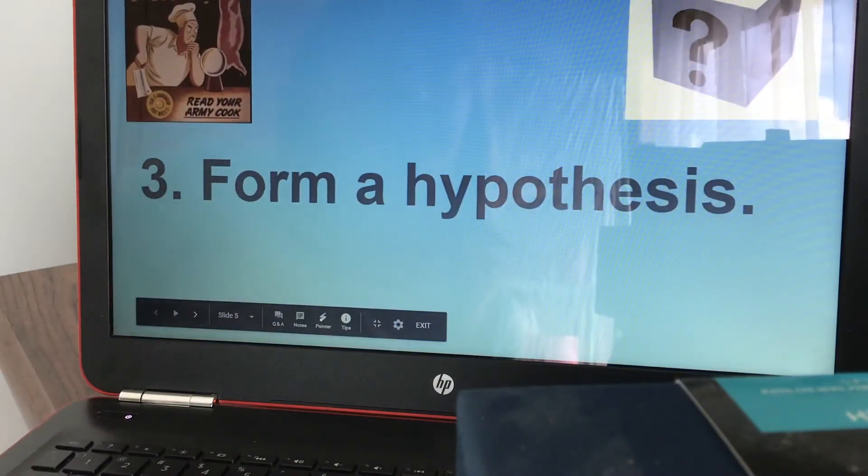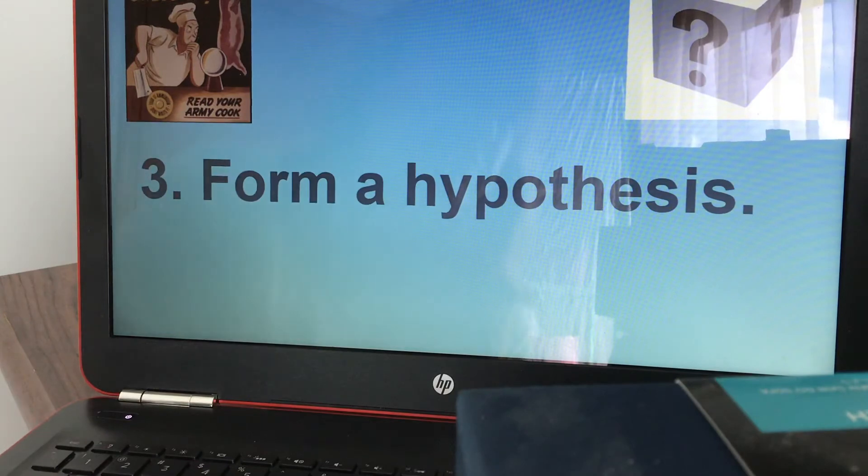And number three is form a hypothesis. So a hypothesis is just something that you think is going to happen in the experiment, how you think it's going to end. So can your hypothesis be incorrect? Yes, it can be and your experiment can still be good.